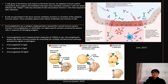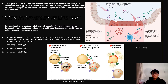T cells develop in the bone marrow and mature inside the thymus. They are a component of the adaptive immune system and contribute to cell-mediated immunity. Cytotoxic T cells can assault infected cells directly once activated. Additionally, helper T cells perform a variety of activities including stimulating B cells and establishing memory T cells that respond to subsequent infections.